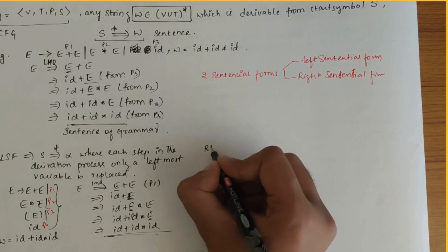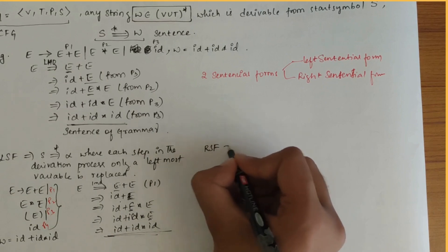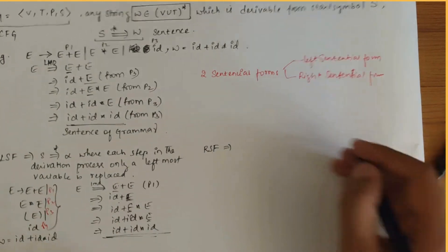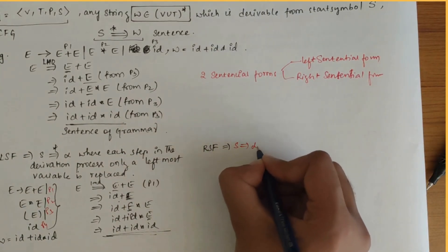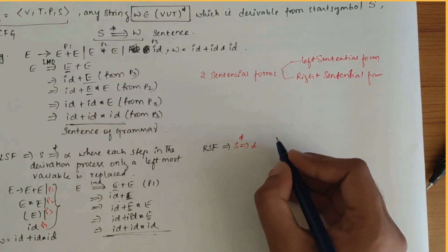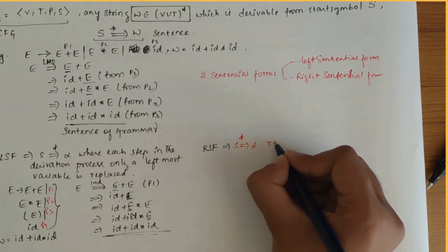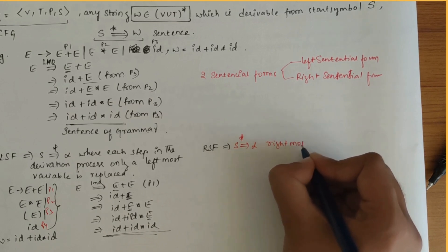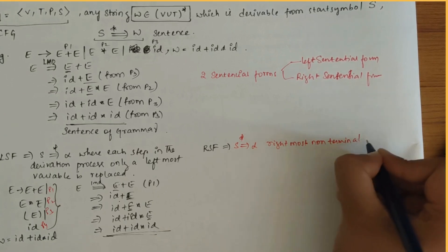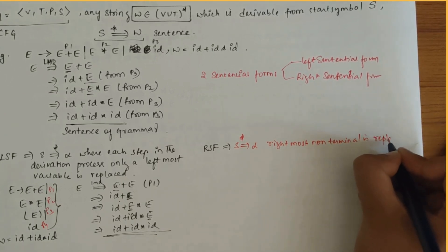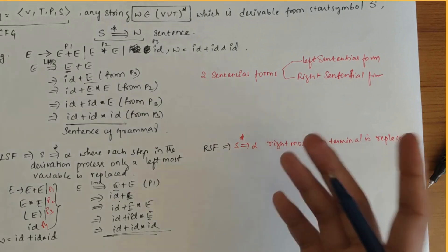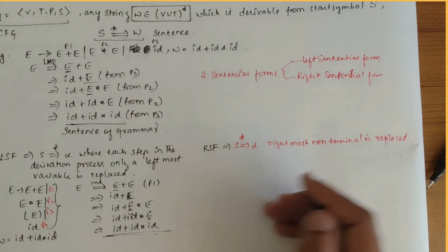Similarly, for the right sentential form: if there's any derivation of the form S derives alpha where at each step in the derivation process only the rightmost non-terminal is replaced, then alpha is called the right sentential form of G.